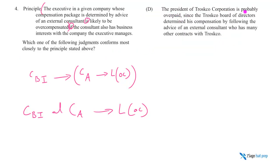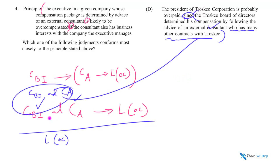D says the president of Trostco Corporation is probably overpaid. Good. Probably overpaid. Again, we have the conclusion that it's likely or probably overpaid. So now I need your premises to match this, to match my sufficient condition. And does it? Well, let's see. Board of directors determined compensation by following the advice of the consultant. Perfect. So this one is good. The advice was taken to determine the compensation. And was a consultant involved with other business? Yes, it was. Who has many other contracts with the corporation. So business interest check. So we do have CBI and we have CA. This bit matches our premises. We trigger the sufficient. We conclude the necessary. This is the correct answer choice.